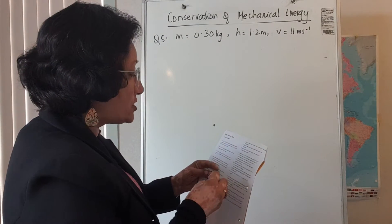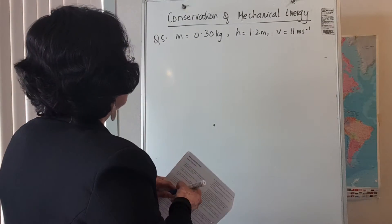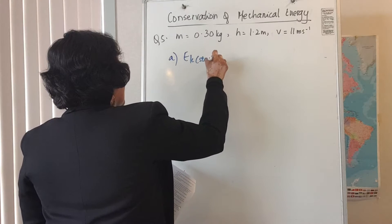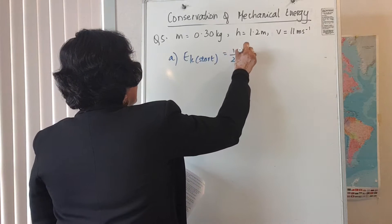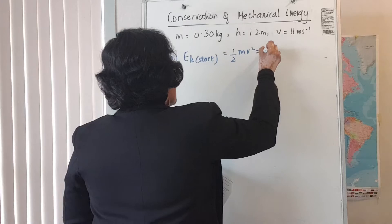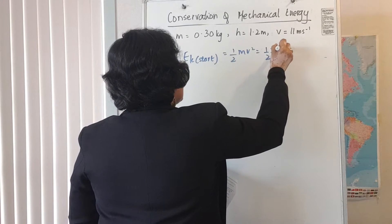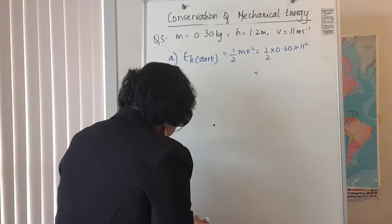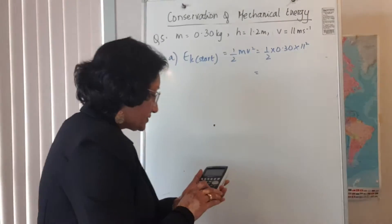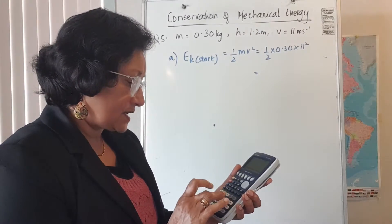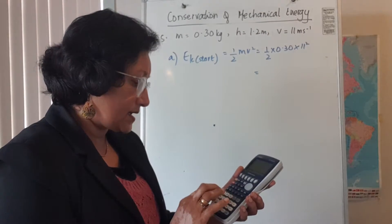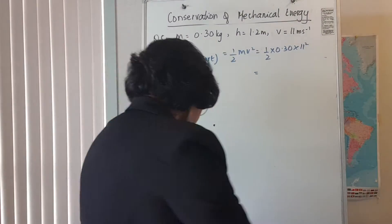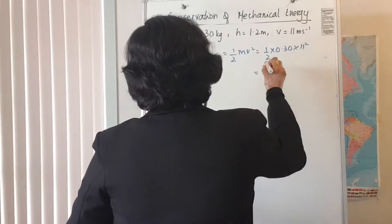So Ek at the start is half m v squared, which is equal to half, and your mass is 0.30 times 11 squared. So you just go 0.5 times 0.30 times 11 squared and I get 18.15 joules. So this answer is 18.15 joules.